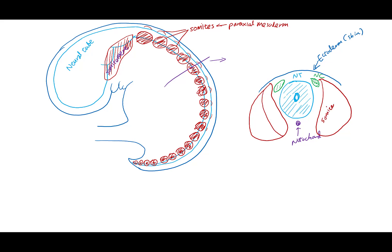The somites soon differentiate into two specialized structures. The medial aspects will become the sclerotomes, and the lateral aspects will become the dermomyotome. As you may have guessed from the name, the sclerotome will give rise to the vertebral bones. The dermomyotome will soon split into the dermatome and the myotome, with the dermatome giving rise to the dermis of the skin and myotome giving rise to the skeletal muscles of the body.